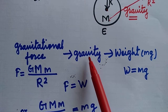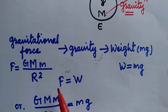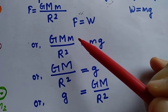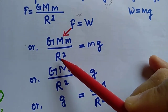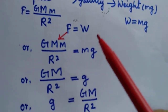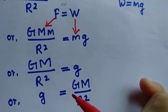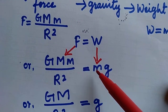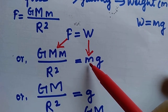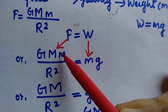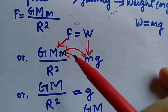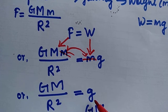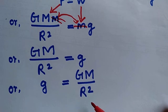We have understood that gravitational force means gravity, and gravity means weight. So we can write F = W. F is gravitational force and W is weight. That gives us G·M·m / r² = mg. In this equation, small m on the left side and small m on the right side both represent the mass of the object lying on top of the earth — they are the same thing, so we cancel them out. What remains is G·M / r² = g, or small g = G·M / r².